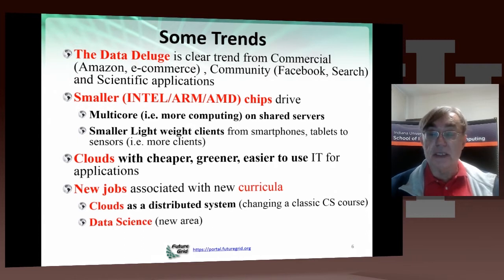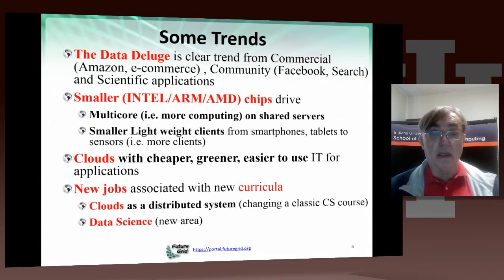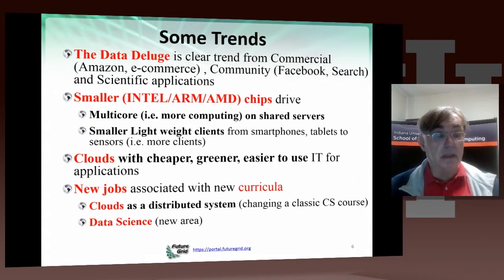Although PCs are still important, they do not have the excitement and driving advance that they did in the past. There's an interesting difference between clients and servers: servers are able to use multi-core chips with great vigor, while clients use smaller chips found in smartphones rather than packing lots of cores. This gets captured in clouds, which offer cheaper, greener, and easier-to-use information technology to process applications — and remember, we are using clouds to solve problems in X-informatics.